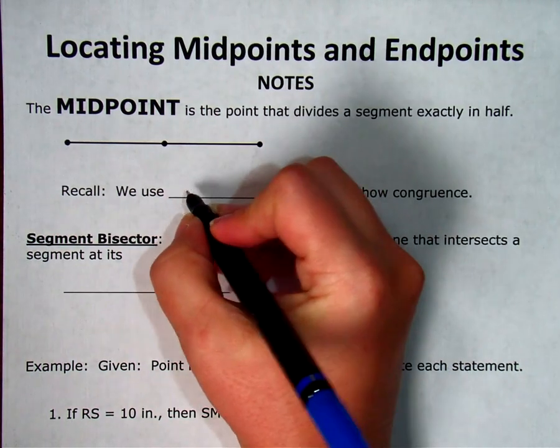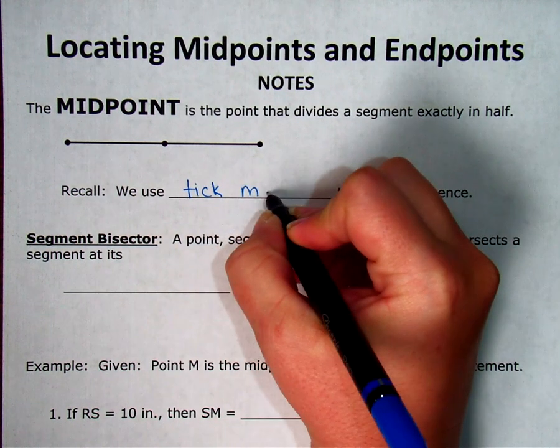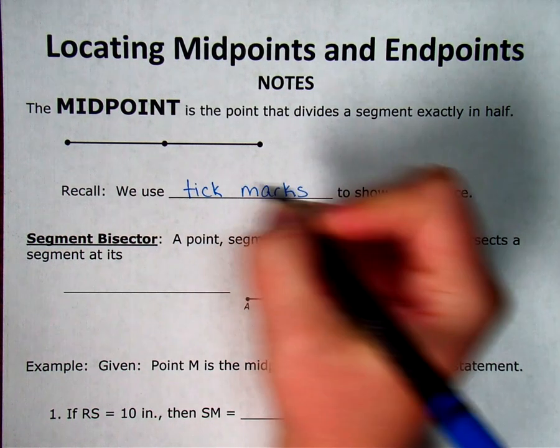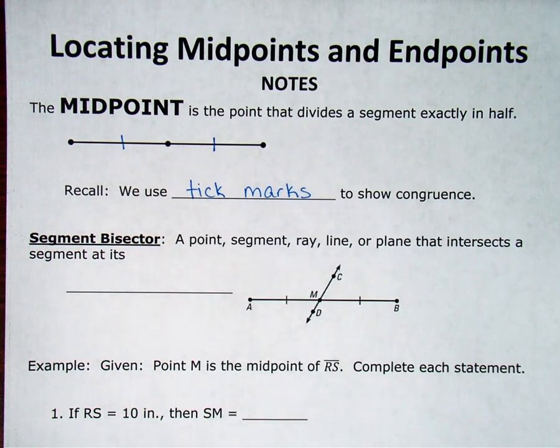And we talked about that we use tick marks in geometry to show congruence. And tick marks are just little marks on the segment that indicate that those two sides are exactly the same.